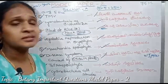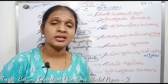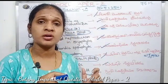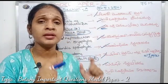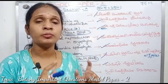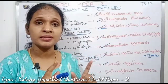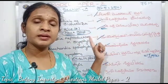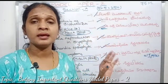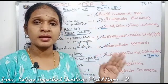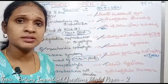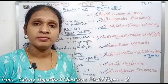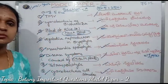For short questions, you can use a simple diagram with a small point. If you have a short question on cyanobacteria, use a small diagram and concise points without wasting time.